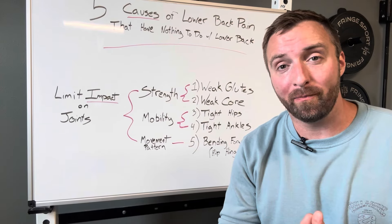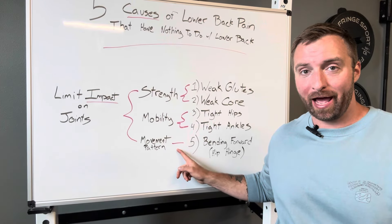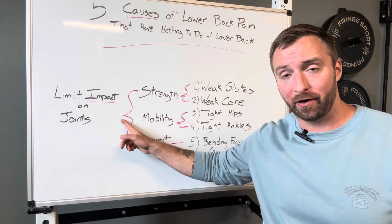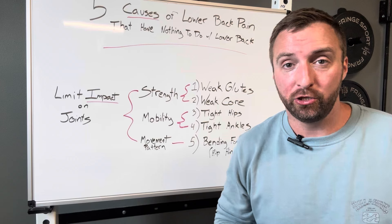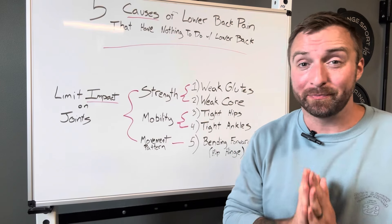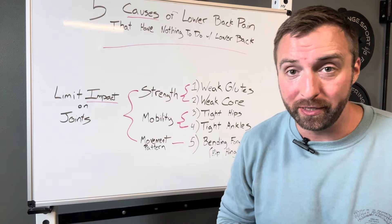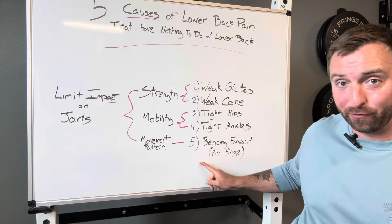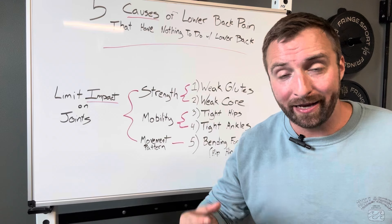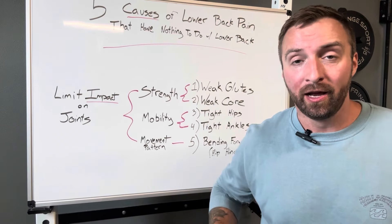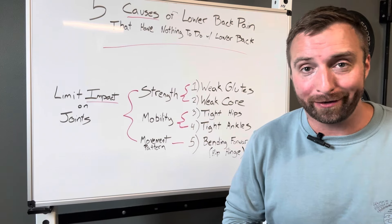And the fifth contributor to lower back pain that has nothing to do with your lower back, we're getting into the movement pattern aspect of what we need to correct to limit impact on our joints. And when I say movement pattern, what I'm referring to is how we coordinate movements to do specific tasks. And specifically relating to your lower back pain, how you bend forward is very important. You need to learn to, in parentheses here, I wrote hip hinge so that you can bend forward while maintaining a neutral spine, engaging the hamstrings and your core so that you can lift things off the ground without putting too much impact on your spine.